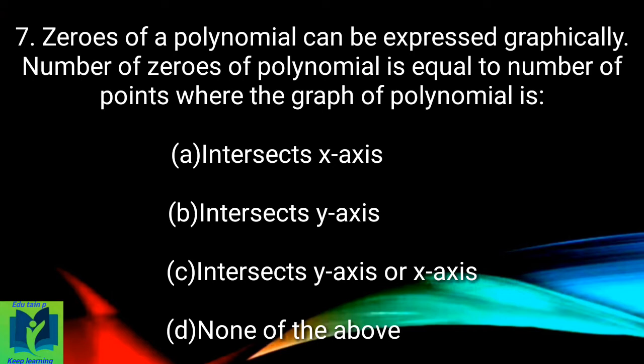Zeros of a polynomial can be expressed graphically. Number of zeros of polynomial is equal to number of points where the graph of polynomial: (a) intersects x-axis, (b) intersects y-axis, (c) intersects y-axis or x-axis, (d) none of the above.